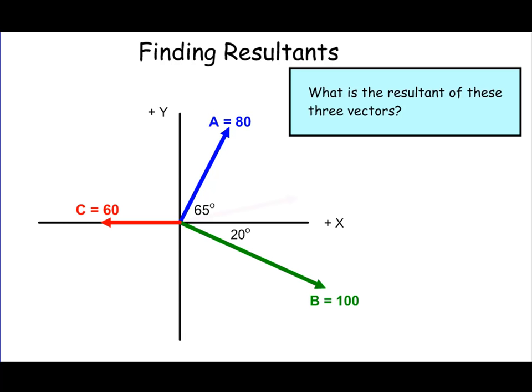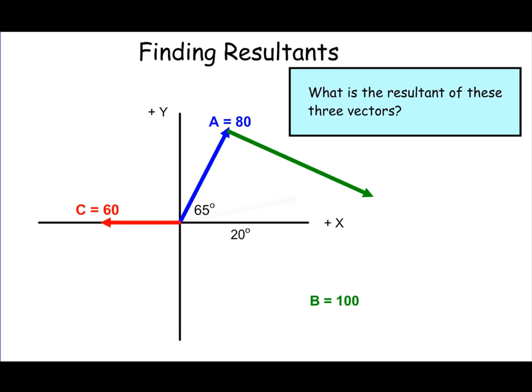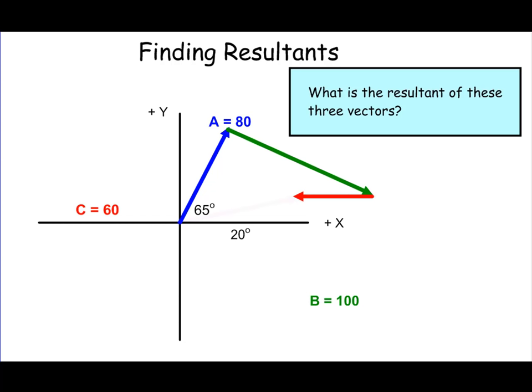To review graphically, you simply place all the vectors head to tail. So with vectors A, B, and C, using the head to tail method, I take vector B and move it so that its tail sits on the head of vector A. Then I move vector C and place it head to tail with vector B. The resultant connects the tail of vector A to the head of vector C — the beginning to the end.